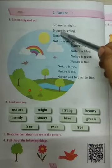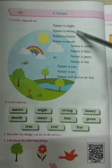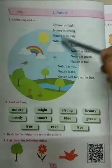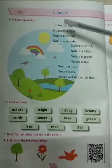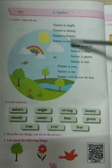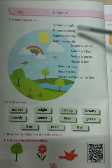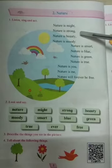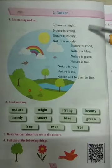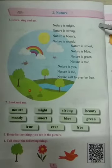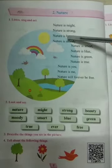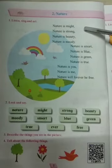Nature is might, nature is strong, nature is beauty and nature is moody. So in these four lines we have learned nature is very strong. It can create anything like rain, sun, disasters.